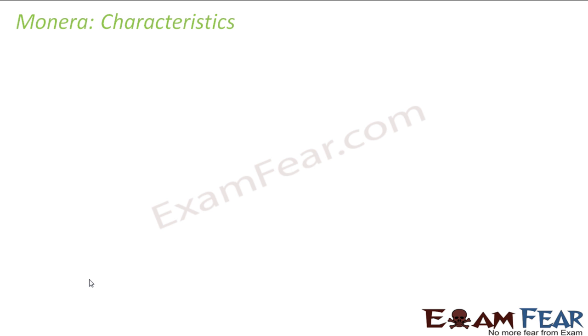Monera is nothing but the kingdom of bacteria. Even inside bacteria, you will have many different types. Bacteria are one of the oldest life forms. When we talk about evolution, we see that each and every living organism today has evolved from some older organism. So many varieties of organisms have actually come up this way — and people say everything, including human beings, has come from some ancient life form, something like bacteria.